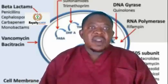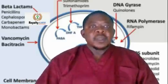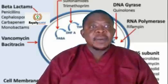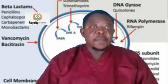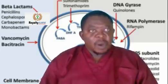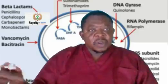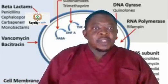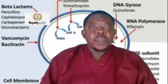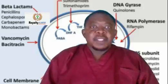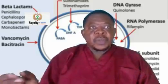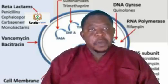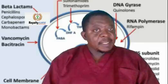Supercoiling occurs when DNA strands are wound together too tightly or not tightly enough. This coiling within the DNA — supercoiling — is essential for a bacteria's ability to replicate. So DNA gyrase is a useful target for antibiotics in order to prevent this replication.